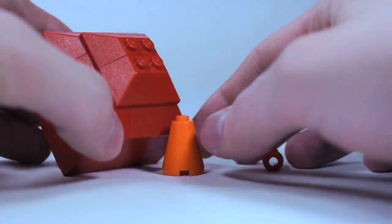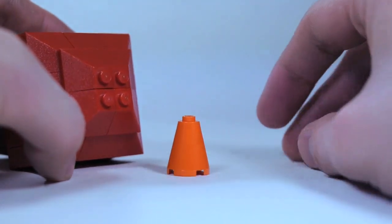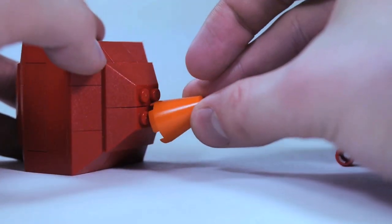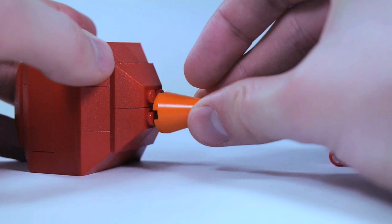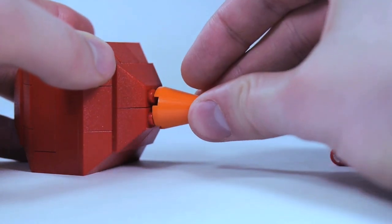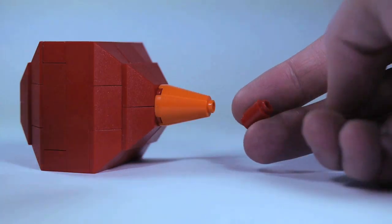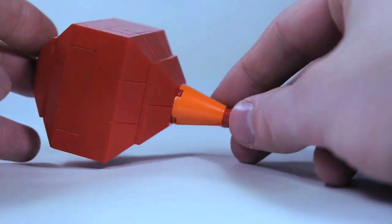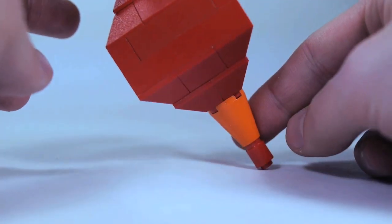Then for the last touch on the top, we're going to take this orange cone that's two bricks tall, and then put this red one-by-one cylinder on the bottom here, and now we've got Tingle's balloon.